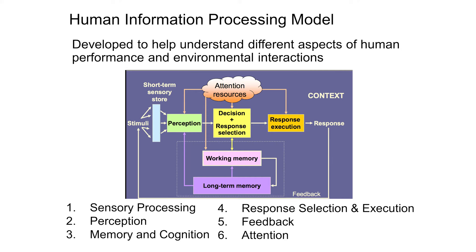In the model, we have six important phases — these are not listed in sequence. Sensory processing, perception, memory and cognition, response selection and execution, feedback, and attention.